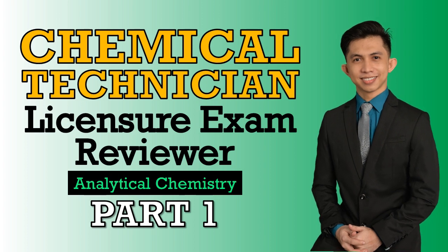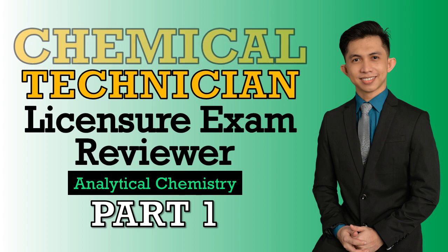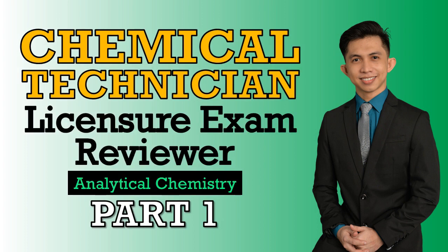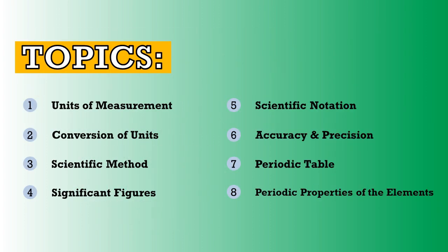Hello everyone, I'm Nestive John. Welcome to the first part of the analytical chemistry review session for the chemical technician licensure examination. For today's session, we will review the following topics: units of measurement, conversion of units, scientific method, significant figures, scientific notation, accuracy and precision, the periodic table, and the periodic properties of the elements.